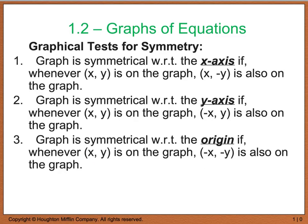To test for symmetry: if a point (x, y) and a corresponding point with the same x but opposite y sign are both on the graph, it's symmetric with respect to the x-axis. If the x has opposite sign and y stays the same, it's symmetric with respect to the y-axis. If both x and y change signs, it's symmetric with respect to the origin. Some graphs have no symmetry at all.